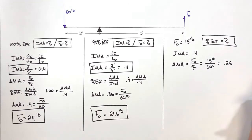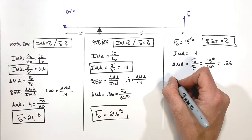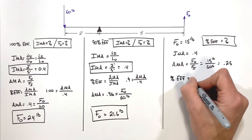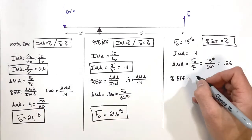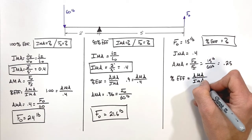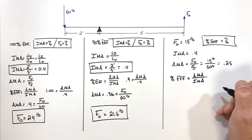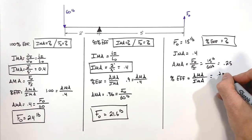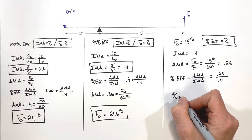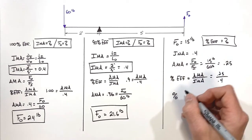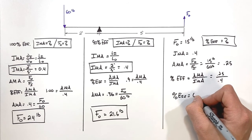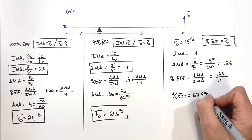We have an IMA and an AMA, and we're solving for percent efficiency. Percent efficiency equals AMA over IMA, which is 0.25 over 0.4. The percent efficiency in this situation is 62.5%.